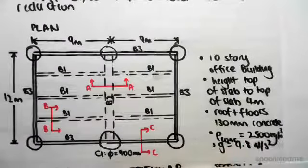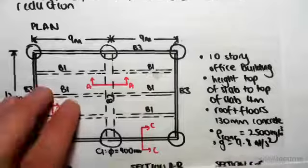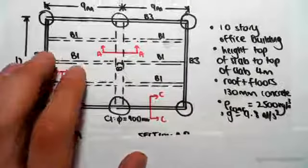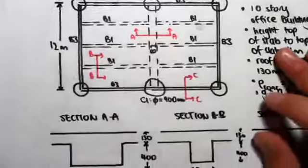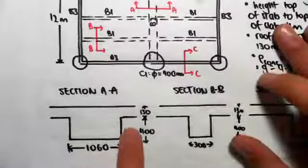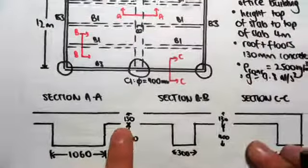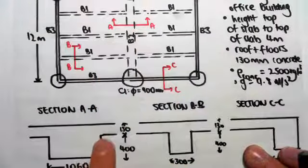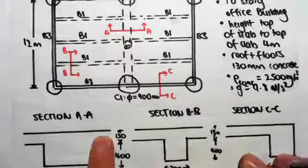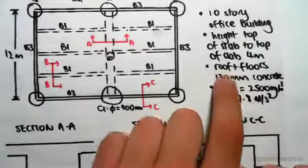We're given sections of each part. Section AA through B2 - you can see for each section AA, BB, CC, the depth of the slab is 130 everywhere, because we said that the depth of the slab is 130 millimeters.